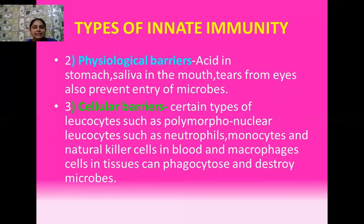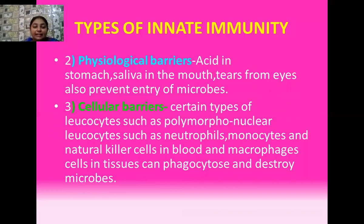Second is physiological barriers. The term physiology is concerned with biochemical things. There are some important chemicals present in your body. For example, your stomach has acid, saliva is present in your mouth, and tears are present in the lacrimal glands in your eyes. All of these prevent the entry of pathogens and do not allow the pathogen to survive.